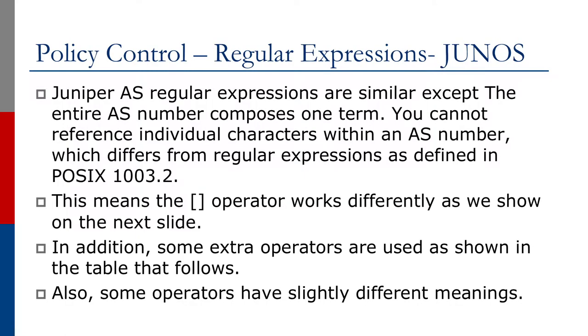Juniper has regular expressions very similar in construct to the Cisco ones but with a couple of differences. Firstly, the entire AS number composes one term inside Juniper AS. It is not possible to reference individual characters within an AS number. So this is a strong difference from regular expressions as defined in the POSIX standard. This means that the square brackets operator will work differently, as we shall show in the next slide. In addition, Juniper uses more extra operators as shown in the table that follows. Also, some operators have been changed in Junos's implementation.